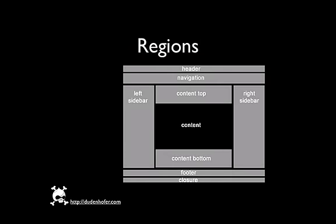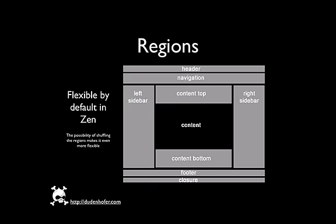Here's the layout of Zen theme's regions by default. They're very flexible — it covers just about every area of the website that you would possibly want to use. The possibility of shuffling these regions around makes it even more flexible. For example, if you move the left sidebar to just to the left of the right sidebar, you would have two sidebars on the right side and the content area on the left. Once you start adding this functionality by shuffling, it further increases the flexibility of the Zen theme.